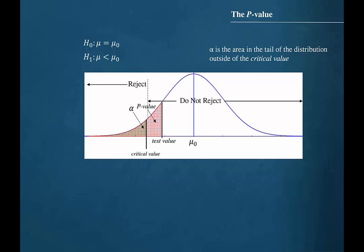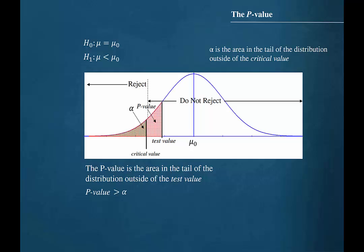Here is another instance of a left-tailed test. This time the test value lands in the region where we do not reject the null hypothesis. Again the p-value is the area in the tail of the distribution outside of the test value, shaded in red. In this instance the p-value is greater than alpha, so our decision should be to not reject the null hypothesis.